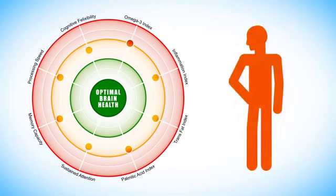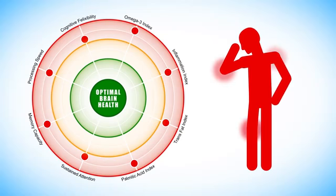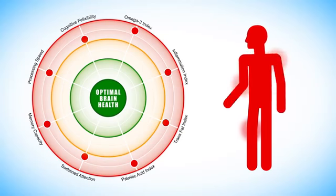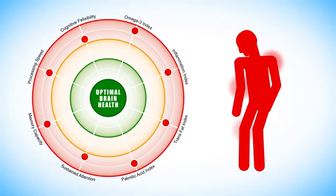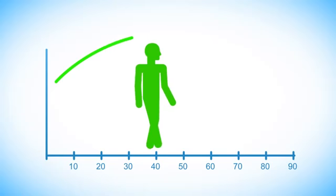Scores in the red or poor zone are associated with poor function, a high inflammatory state with possible increased risk of future diseases and premature cognitive decline.